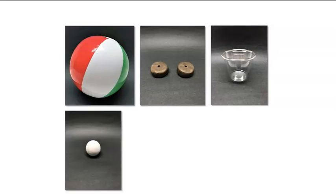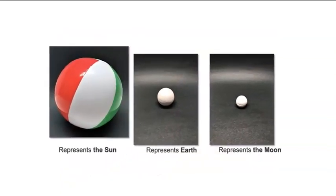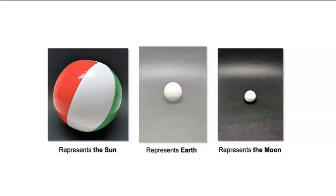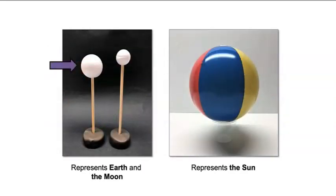Here are our materials: a beach ball, modeling clay, a plastic cup, a large foam ball, a small foam ball, and two wooden dowels. How can we use these materials to make a model of the sun, Earth, and the moon? We know that the sun is much bigger than Earth and the moon, so the beach ball should represent the sun. We also know that the moon is smaller than Earth, so let's use the small foam ball to represent the moon and the large foam ball to represent Earth. We can put each foam ball on a wooden dowel and place the dowels in modeling clay, and use the plastic cup under the beach ball to hold it in place.